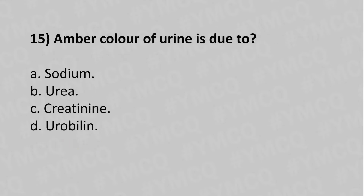Now let's move to question number fifteen: The amber color of urine is due to which of the following? Option A: sodium. Option B: urea. Option C: creatine. Option D: urobilin. The answer is Option D: urobilin.